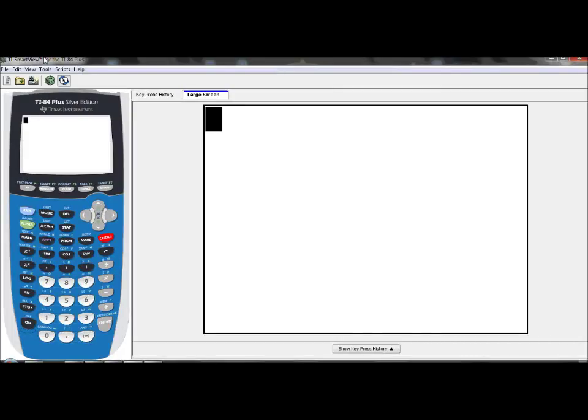Before we get started with analyzing the graphs of polynomial functions, we want to make sure that we know how to use our graphing calculator to assist us in finding relative maximum, relative minimum, and zeros of polynomial functions. So get your calculator out, and we're going to do a couple of guided examples to refresh our memory on how to do this.